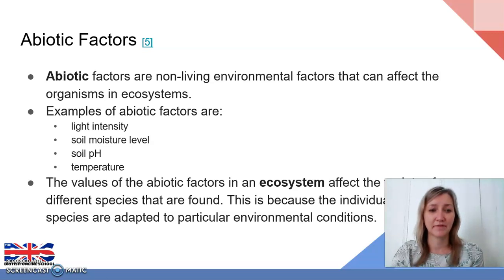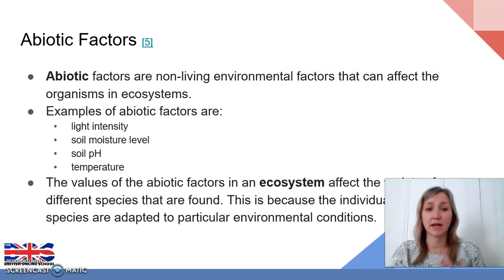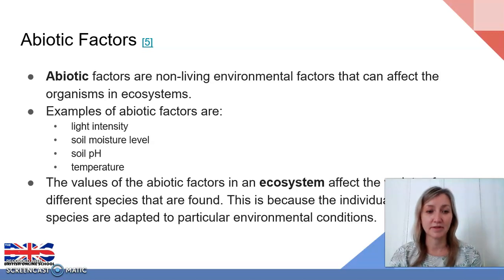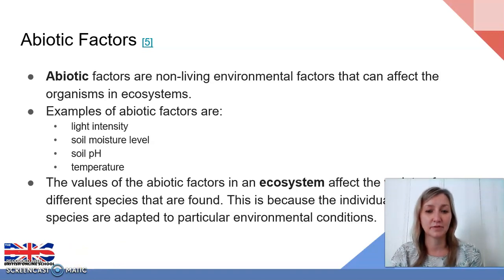Some examples of common abiotic factors are light intensity — whether there's a great amount of sunshine or a very reduced amount, either due to weather or a canopy from a rainforest. Soil moisture level means how dry or wet the soil is. Soil pH means how acidic or alkaline the soil is. And temperature is the temperature of the habitat the animal is living in. The values of abiotic factors in an ecosystem affect the variety of species that can be found, because individuals in each species are adapted to particular environmental conditions.